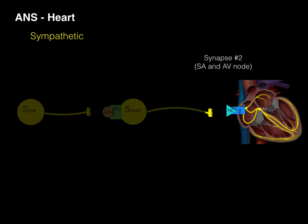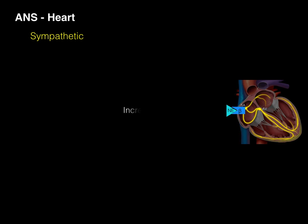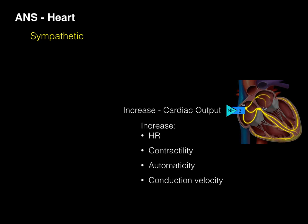This is now where the SA and the AV node are located. And when this occurs, this is going to increase the cardiac output by increasing the heart rate, increasing contractility, automaticity, and conduction velocity. All of those things are going to be what norepinephrine is going to cause.